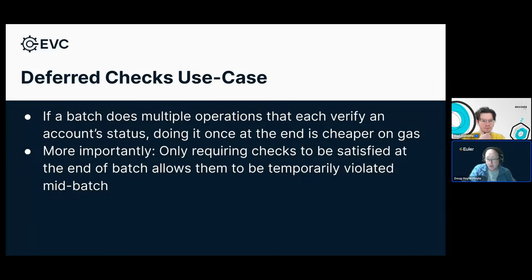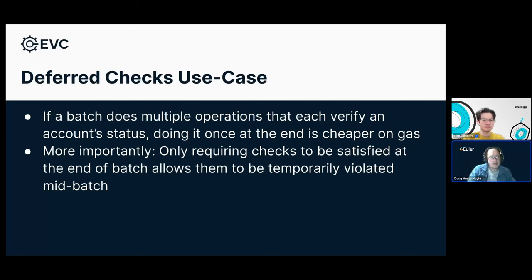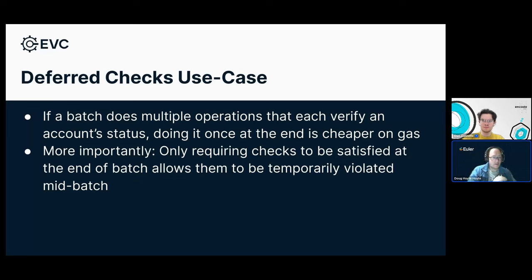This is how you can do a flash loan — what we call flash liquidity — where you perform some operation that would cause a temporary violation, but as long as that violation is only temporary because you solve it later in the batch, it will not cause a problem. Deferred checks also help with gas usage — if you weren't doing deferrals, after every single operation you might be doing the status checks. But if you throw all those operations into one batch, that only happens once at the very end. Checking the state of an account involves pricing, so this can save a lot of gas.